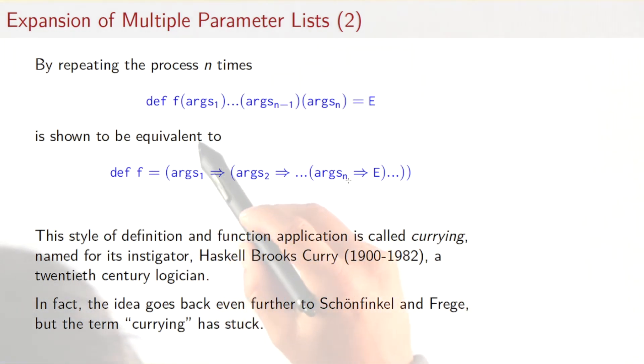Now, if we repeat that process n times, then our original n parameter list function is mapped to a function that has no parameter list at all, but on the right-hand side we have n nested anonymous functions. This style of definition and function application, where essentially every function is mapped to an expression that consists of nested anonymous functions that each take one parameter, is called currying. It's named after its promoter, Haskell Brooks Curry, who was a logician in the twentieth century. It's no coincidence that Haskell Brooks Curry shares its first name with the Haskell programming language. In fact, this idea goes back even further to Schoenfinkel and probably Frege, but the term currying has stuck.